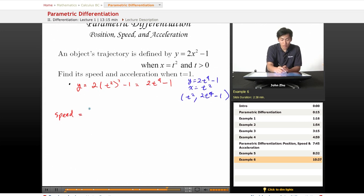Speed equals the square root of dx/dt, which is 2t, squared, plus dy/dt, which is 8t cubed, squared. And at t equals 1,